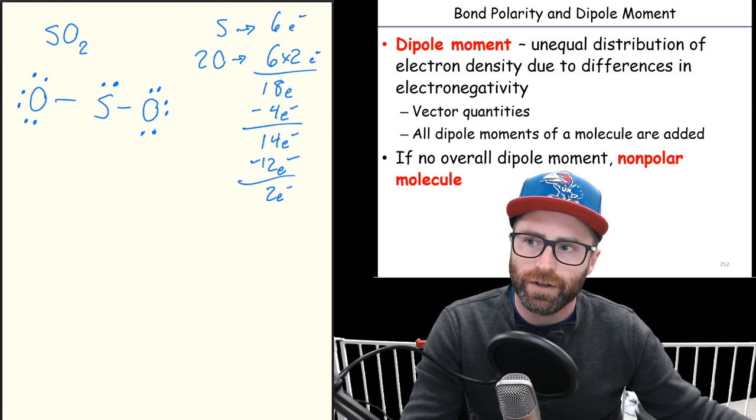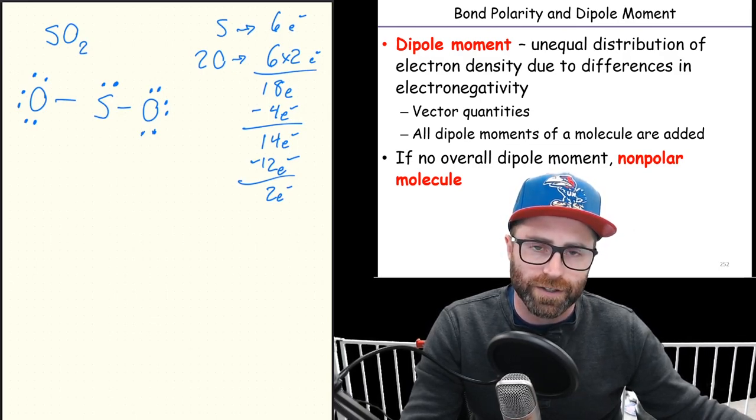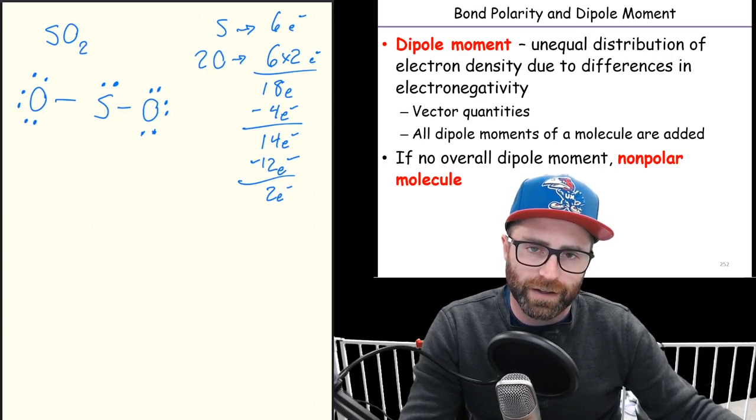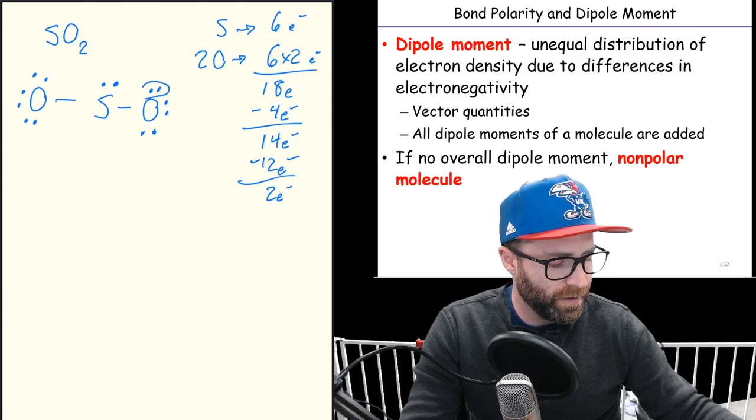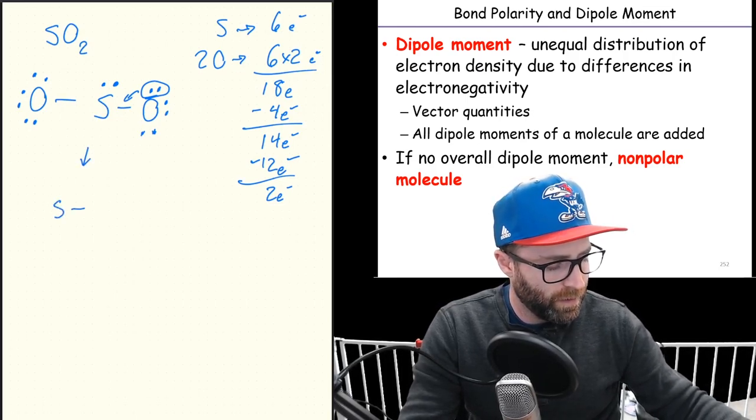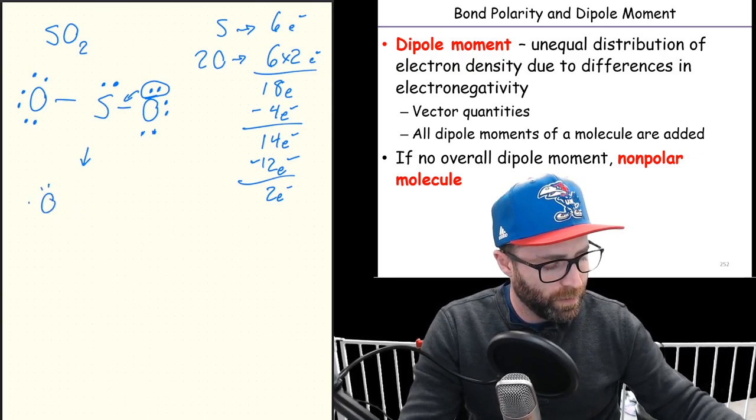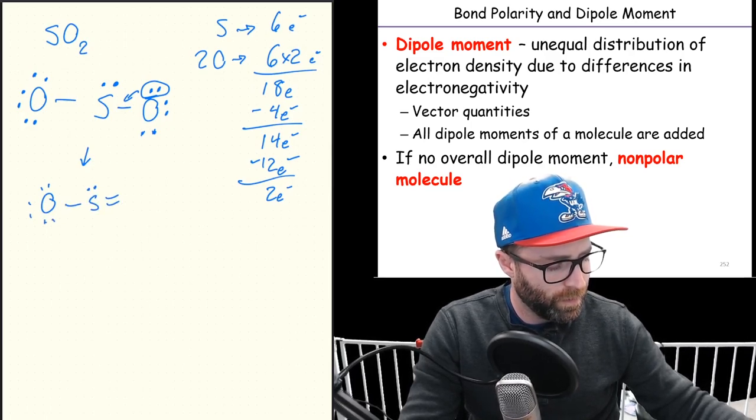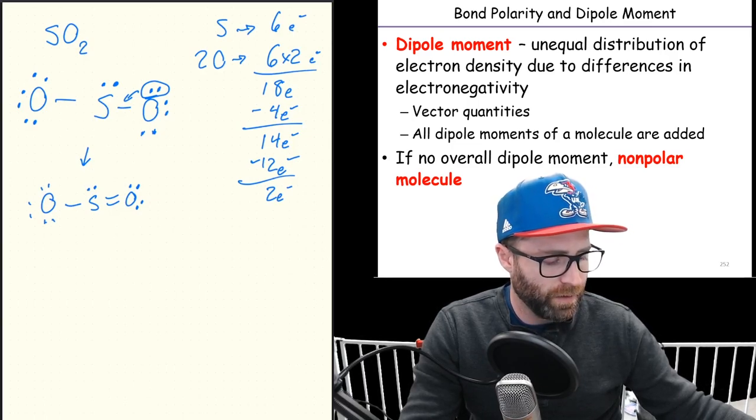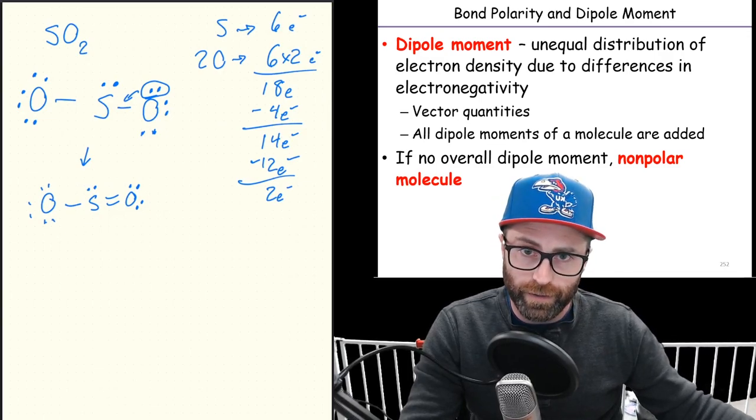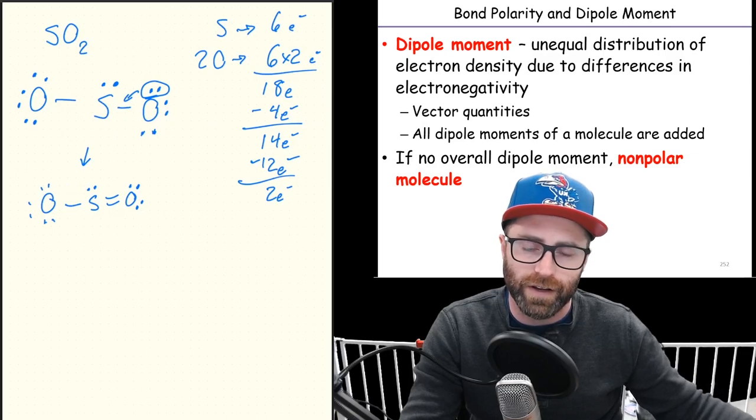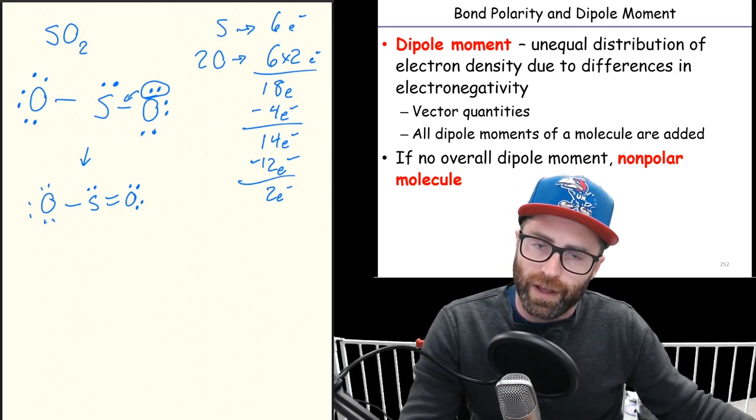We've got ourselves a Lewis structure, but if it's going to be the right Lewis structure, we need to make sure it's got proper formal charges and everything has an octet. Quick glance - does the sulfur have a full octet? No. So let's use one of our lone pairs to make another bond.